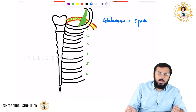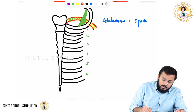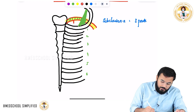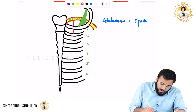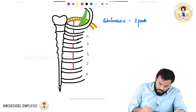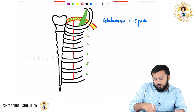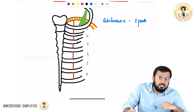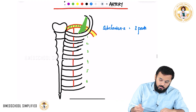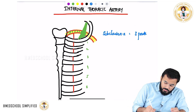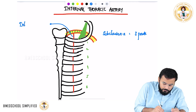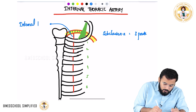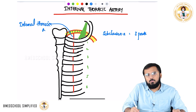From the first part of the subclavian artery, you have a branch hanging down all the way into the thoracic cavity. This branch, which enters inside the thoracic cavity, is called the internal thoracic artery because it is inside the thoracic cavity. So this branch is called your internal thoracic artery.